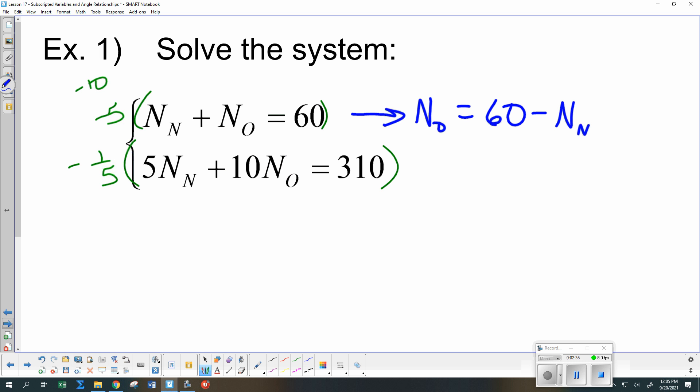I heard substitution first. So we're going to do the substitution way. If we let NO be 60 minus NN, that means I need to find the NO here. And I'm going to change it to what I just found in this formula. So that I keep the 5NN plus the 10 times NO is the same as 60 minus NN. And then that needs to be equal to 310. Race me. You guys go ahead and solve it.